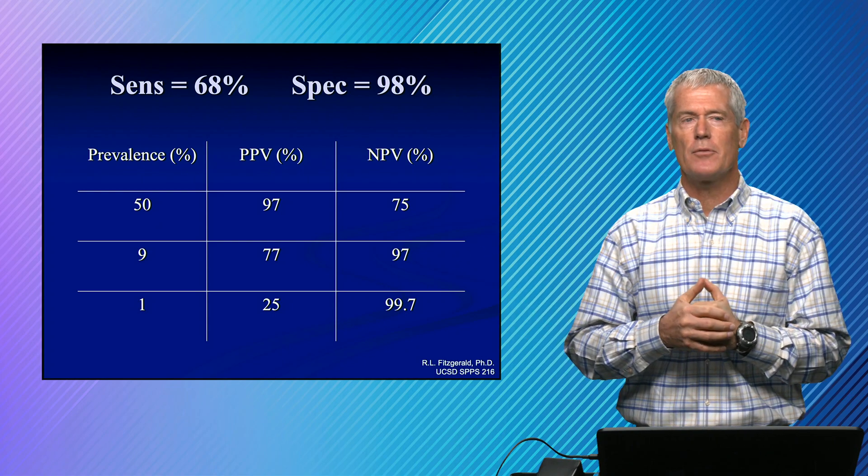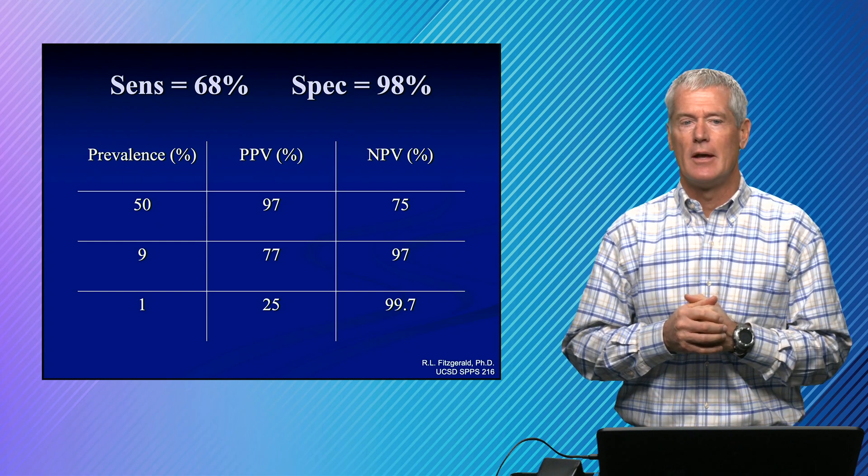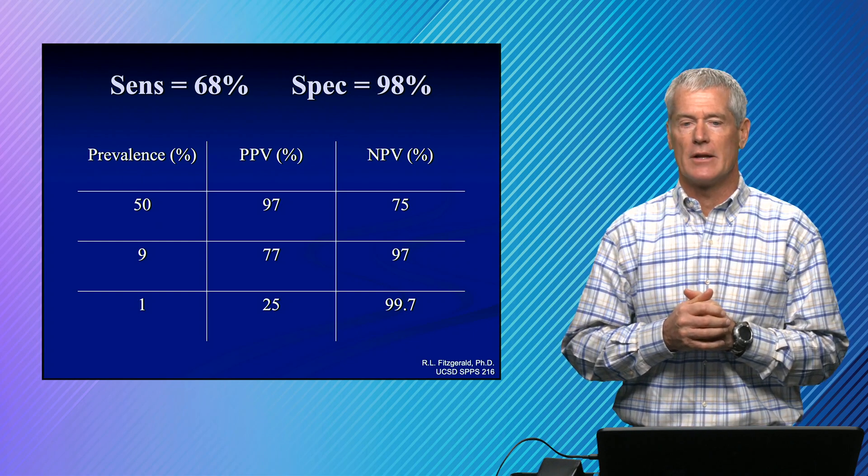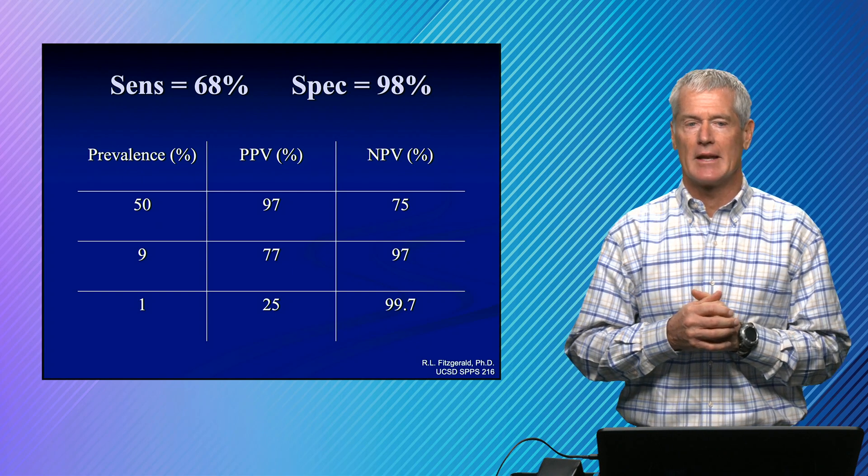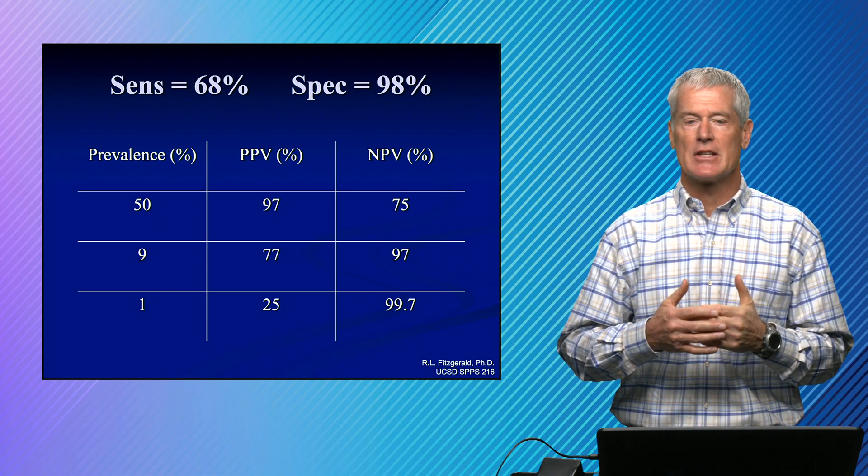And so where does this become important? It becomes important when you're screening people in a population that has a low prevalence. It's very hard to have a good screening test in a low prevalence. You're going to have lots of false positives.